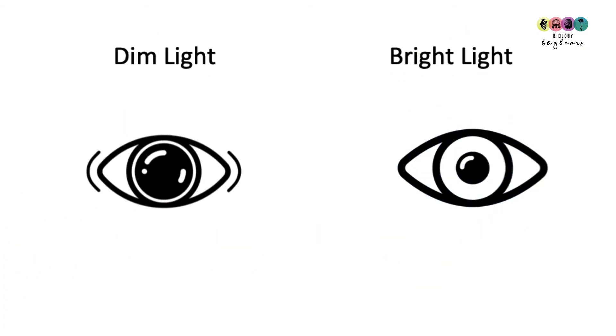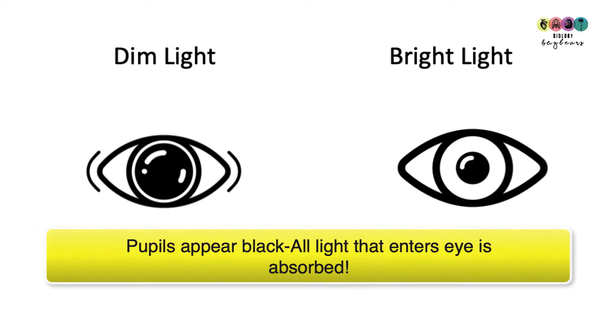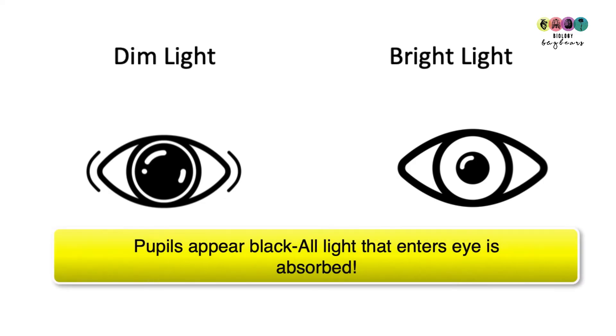This diagram shows the difference between the pupil in dim light and in bright light. In dim light you can see a dilated wide pupil and in bright light you can see the pupil is narrowed. This limits the amount of light going into the eye. The reason why your pupil is black or appears black is because any light that enters the eye is absorbed. Nothing leaves the eye. Nothing is reflected outwards.